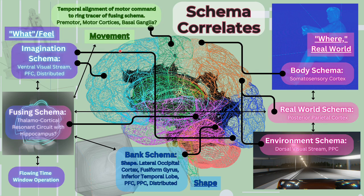Now let's add movement — at least temporal alignment to motor commands — connected to the fusing schema, the alignment rings, and the alignment tracer. We've connected the 'where' dorsal path with the 'what' ventral path and the imagination region. These were two segregated circuits now brought together in the fusing schema. Key convergence spots include the hippocampus, the posterior parietal cortex, and the thalamocortical resonant circuit.